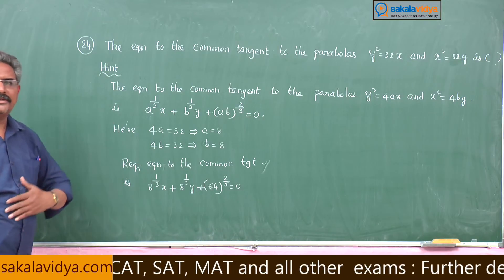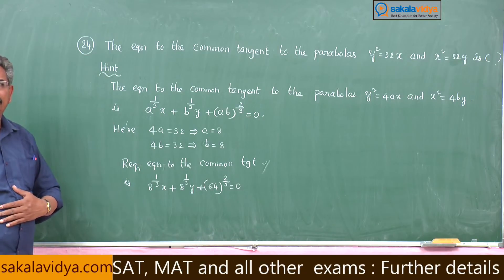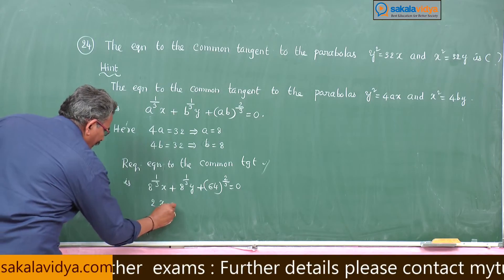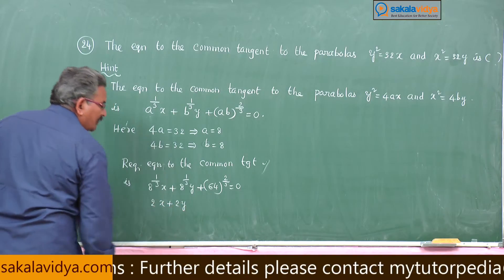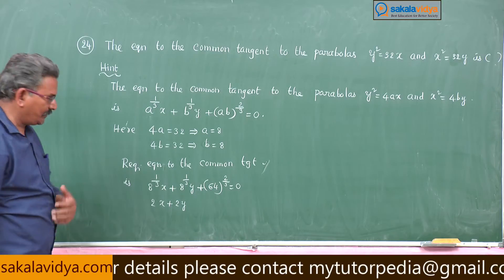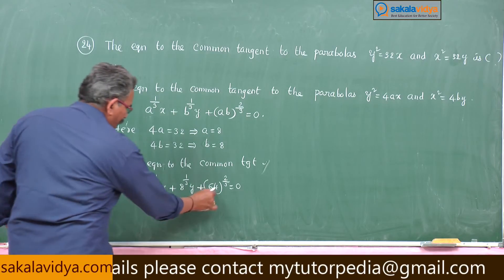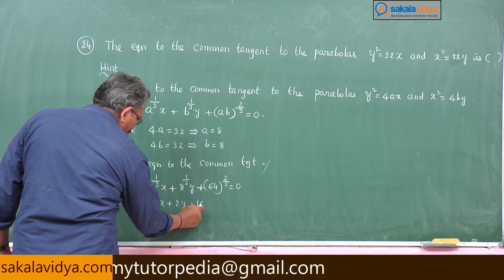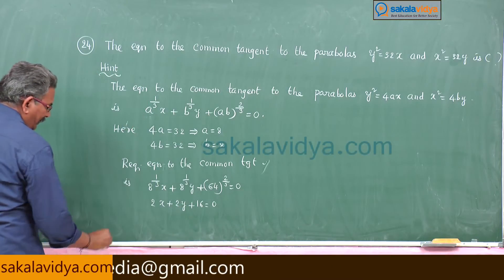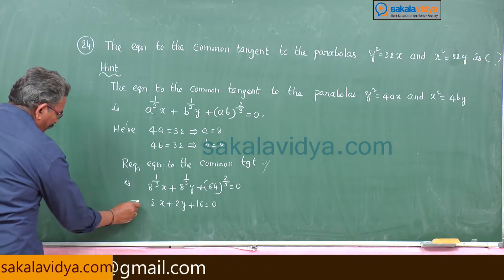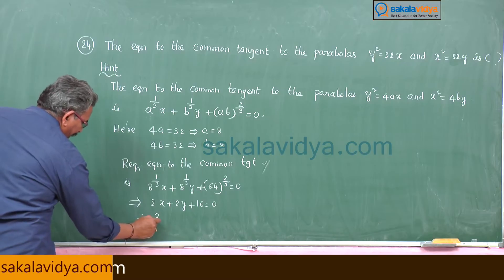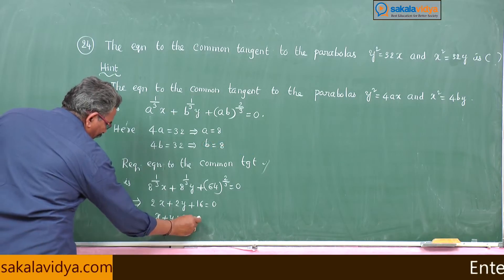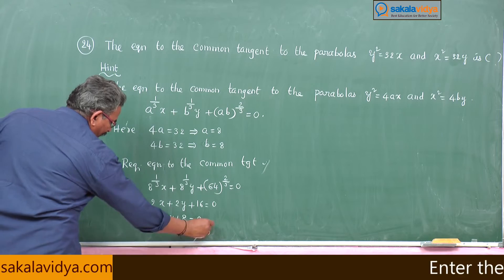The cube root of 8 is 2, so this becomes 2x + 2y. The cube root of 64 is 4, so 4² = 16. This gives 2x + 2y + 16 = 0. Dividing both sides by 2, the answer is x + y + 8 = 0.